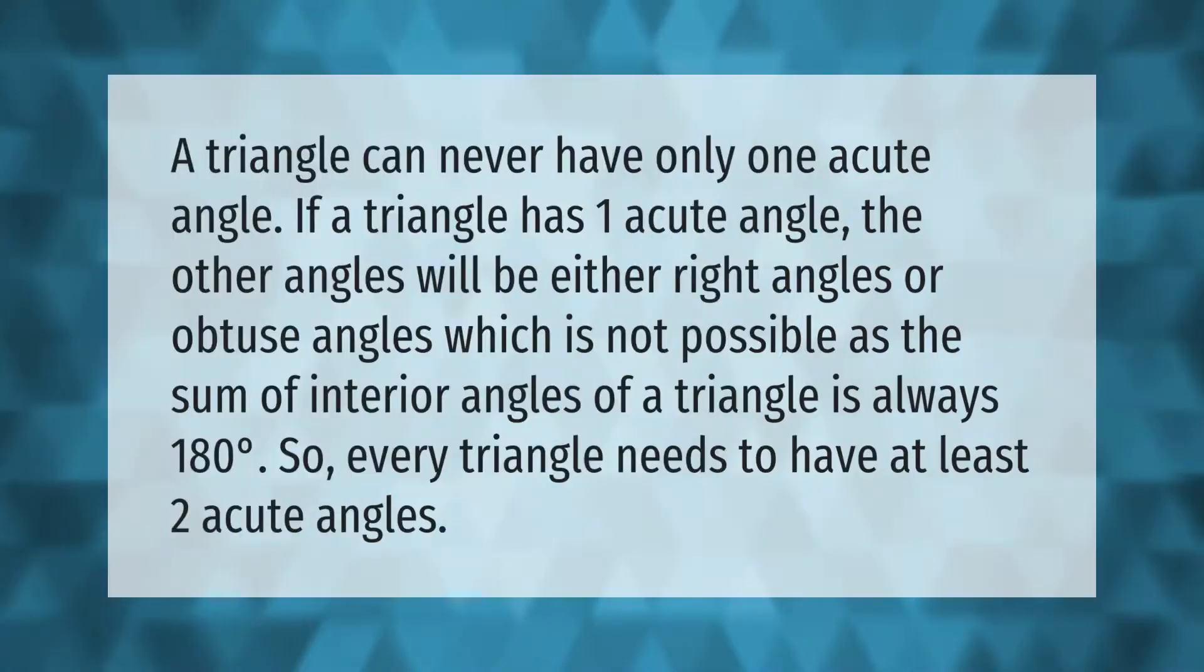A triangle can never have only one acute angle. If a triangle has one acute angle, the other angles will be either right angles or obtuse angles, which is not possible as the sum of interior angles of a triangle is always 180 degrees. So every triangle needs to have at least two acute angles.